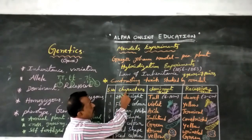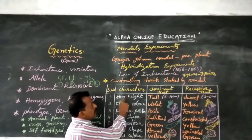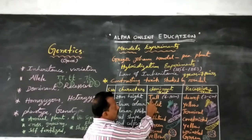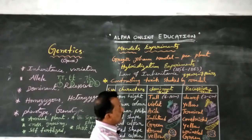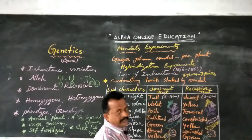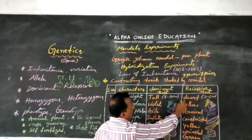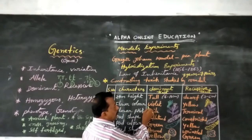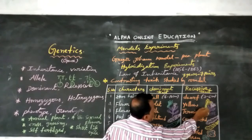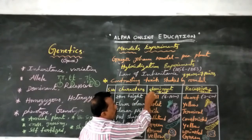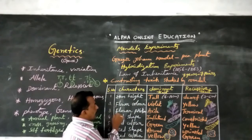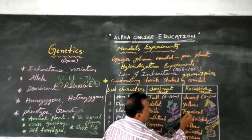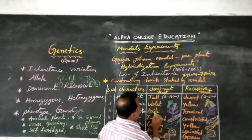Mendel studied 7 pairs of contrasting characters or contrasting traits. The first contrasting trait is stem height. One plant stem is tall and another plant stem is dwarf. The tall plant stem height is 6 to 10 cm and the dwarf plant stem height is 3 to 6 cm. So tall is the dominant trait and dwarf is the recessive trait. The second character is flower color. One plant flower appeared violet in color and another appeared yellow in color — violet is dominant and yellow is recessive. The third character is flower position. One plant's flowers are arranged in axial position, another in terminal position — axial is dominant and terminal is recessive.